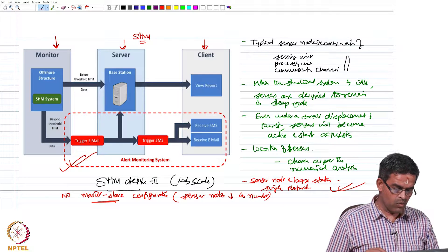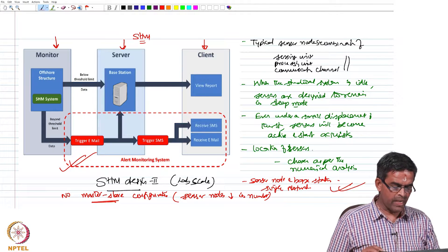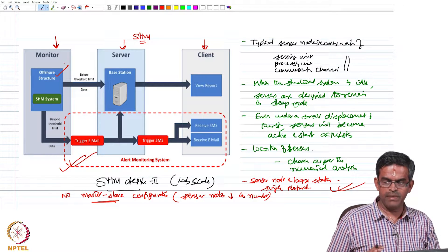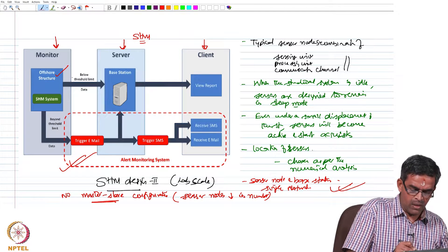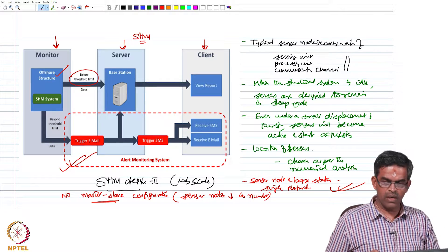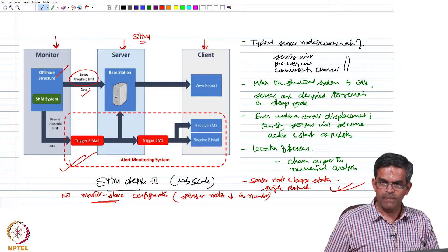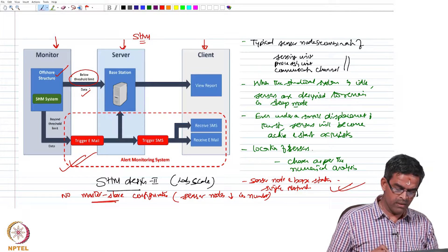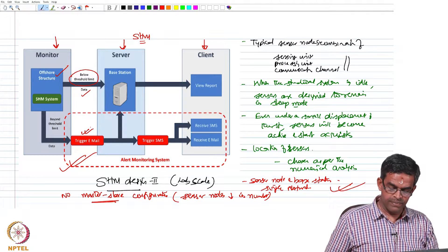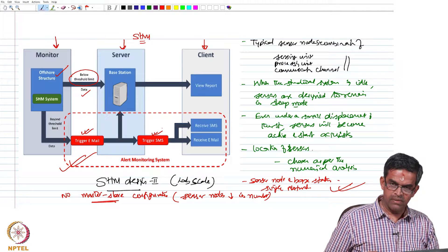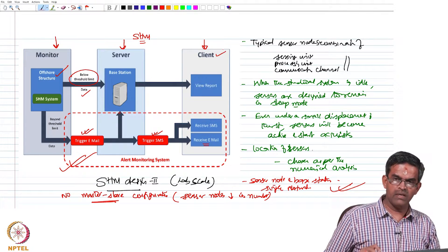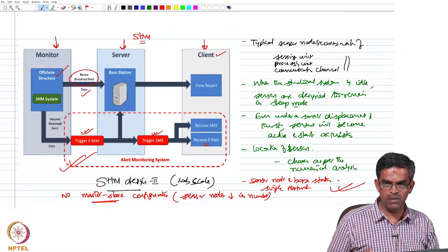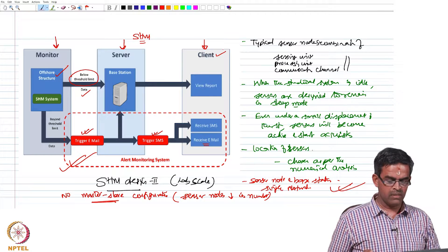When you have preliminary data of analysis of the offshore structure and you know the maximum displacement the structure is permitted to undergo, you fix up a threshold value. When the acquired data on mapping with the existing data exceeds the threshold value, then it has to trigger an email and SMS. The email has to be received in the client server showing that the structure has undergone a response which is above or more than the threshold value.